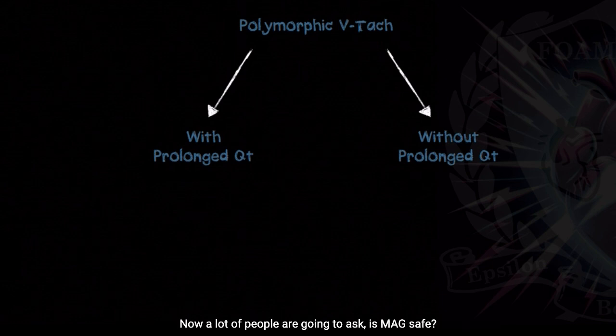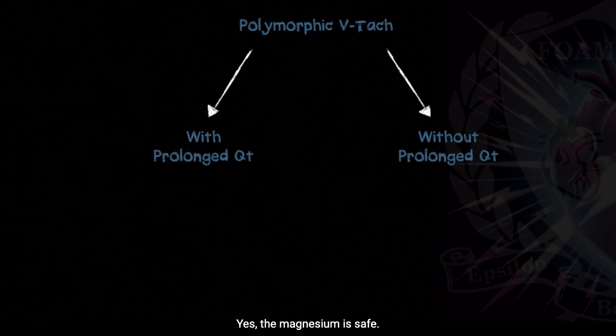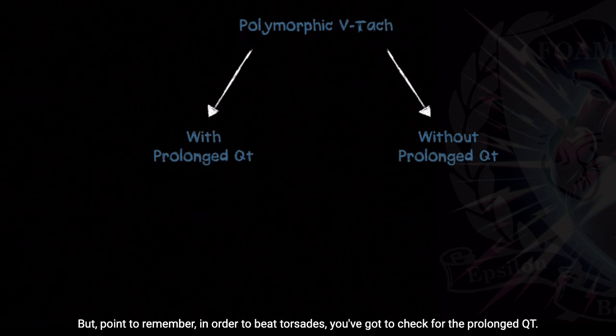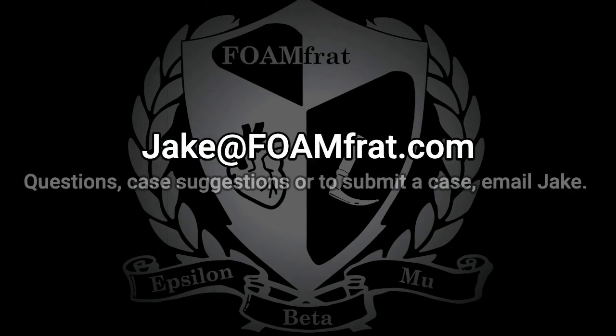A lot of people are going to ask: is mag safe? What if the patient's having acute coronary syndrome? Yes, the magnesium is okay. We can just give it and that's fine — it's not going to be of any harm to the patient. But the point to remember is that in order to diagnose torsades, we've got to check for the prolonged QT.